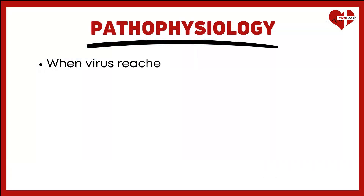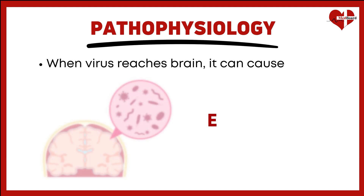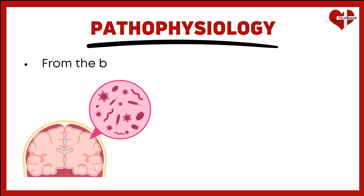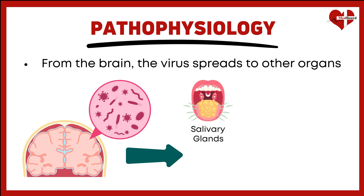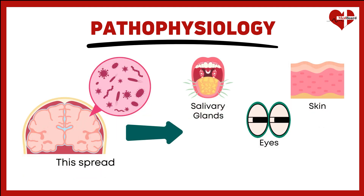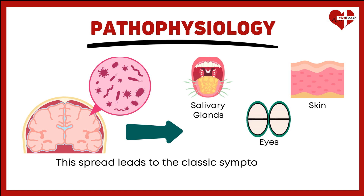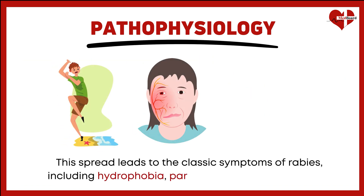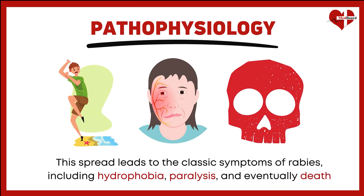Once it reaches the brain, it causes encephalitis, or inflammation of the brain. From the brain, the virus spreads to other organs like the salivary glands, eyes, and skin. This spread leads to the classic symptoms of rabies, including hydrophobia, paralysis, and eventually death.